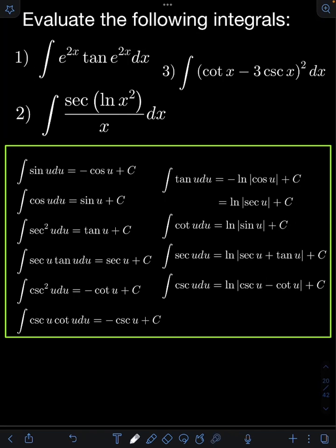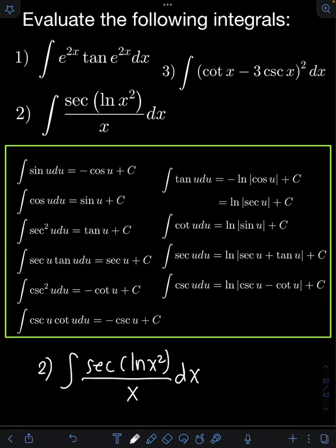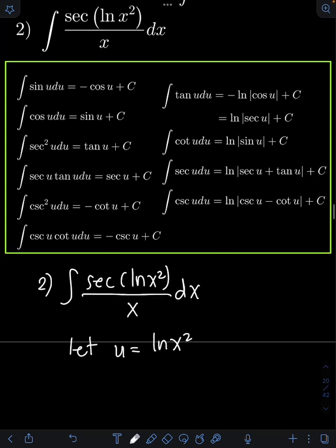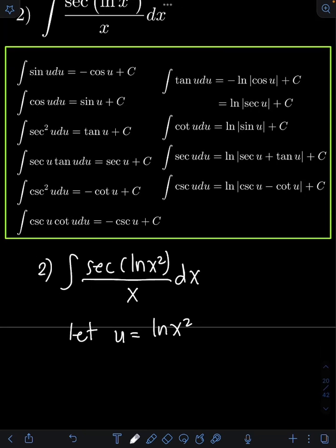For number 2, we have the integral of sec(ln(x²)) / x dx. Let's apply u-substitution first, letting u = ln(x²). Getting the derivative of both sides: du equals 1/x² times the derivative of x² by the chain rule.